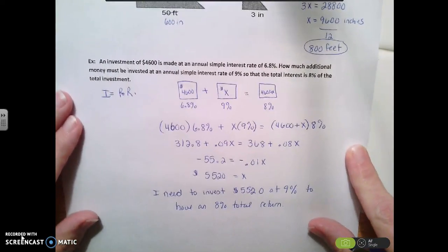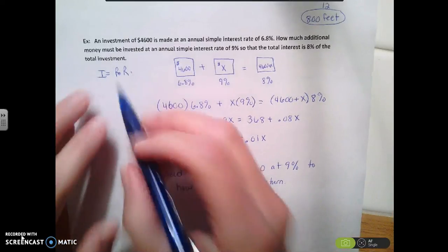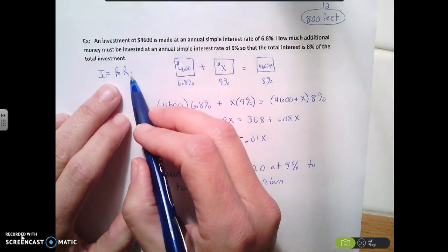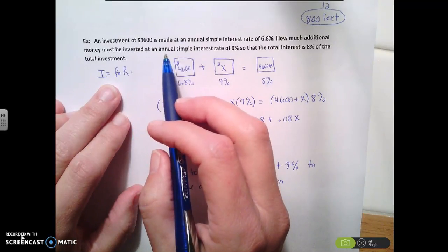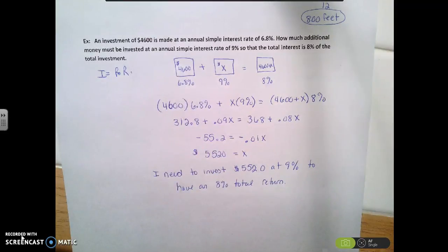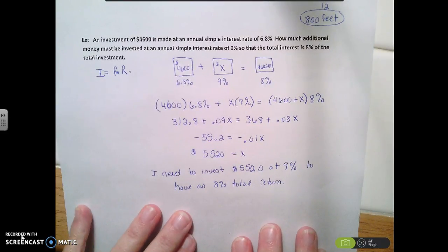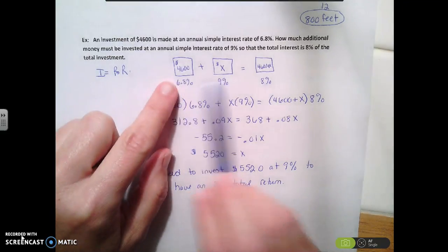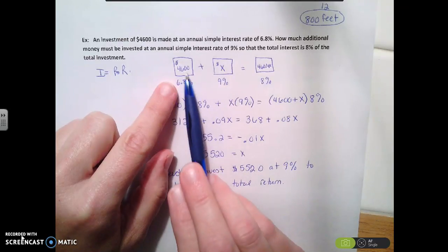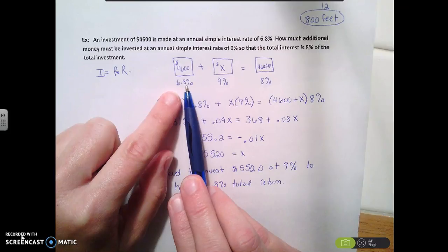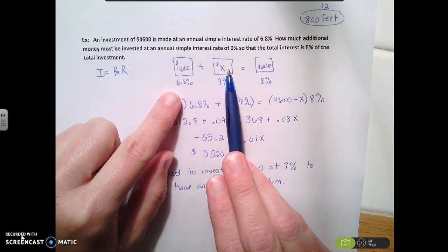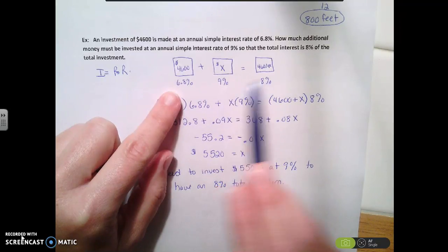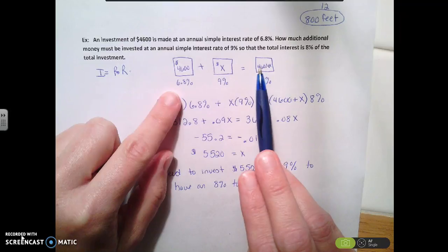All right, the next one is talking about investments and interest rates. So we have this formula, principal times rate times time. But in this case, the time is always a year, because it says annual interest rate. So what they said is I invested $4,600 at a rate of 6.8%. Now I need to invest some more money in a 9% interest, but I want the total return at the end of the year on all of my money to be 8%. So I like to set up these boxes. It's like a chemistry equation. So I have $4,600 at 6.8%. I have another amount that I don't know yet at 9%.